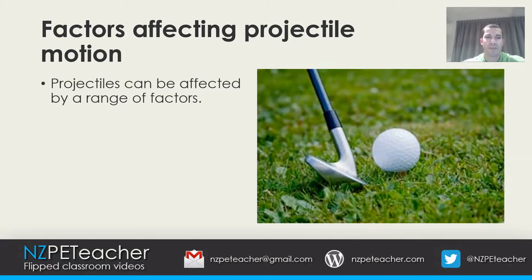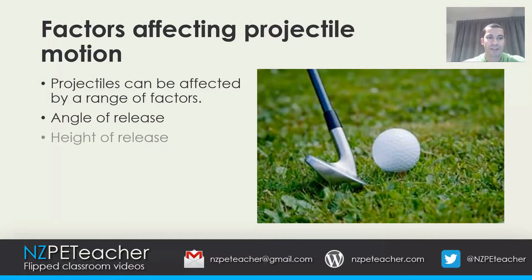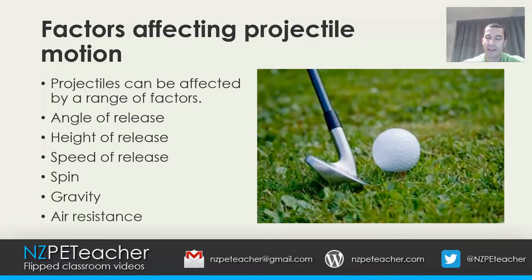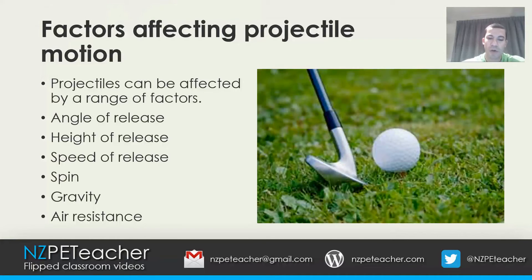Projectiles can be affected by a range of factors. Angle of release, height of release, speed of release, spin, gravity, and air resistance are all factors that can affect projectile motion. In this video in particular we are going to be looking at angle, height, and speed of release.